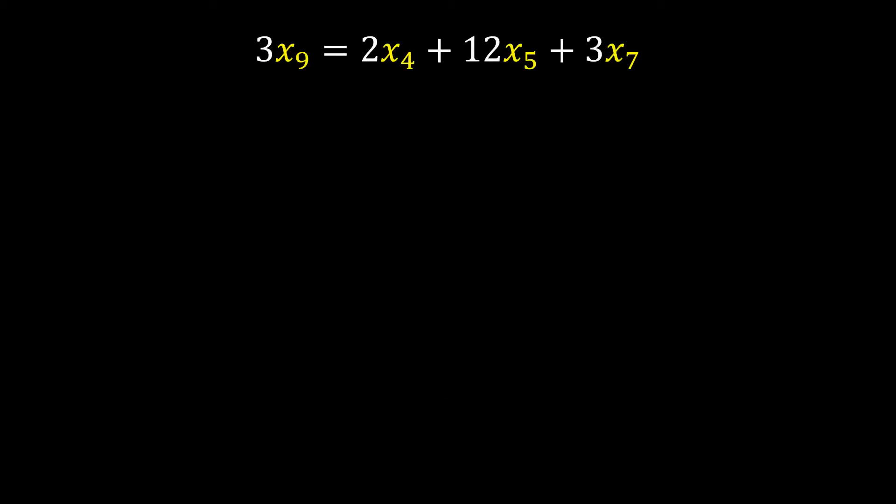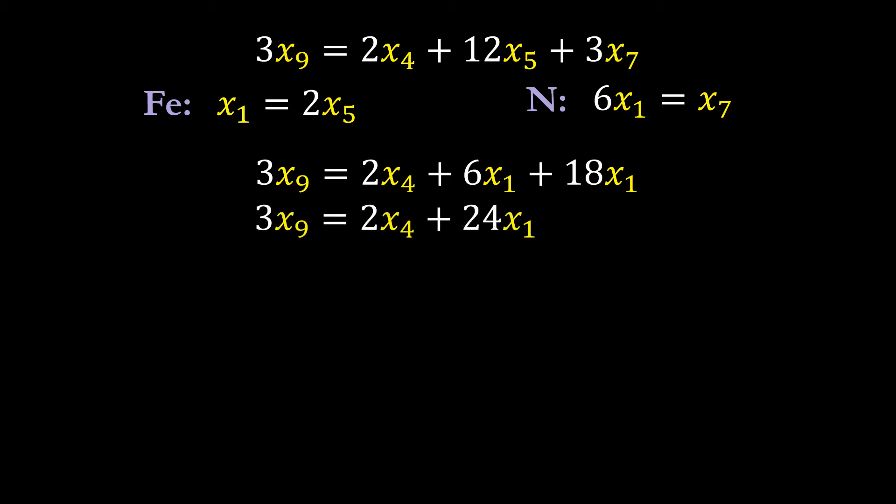So we can continue to try to simplify our equation. What you might recognize is that the X5 and the X7 at the end of this equation can be rewritten in terms of X1, both of them, using the iron equation and the nitrogen equation. So if we plug in for X5 and X7, we get this formula right here, and we can simplify that to this right here. So we've reduced that equation by another variable.